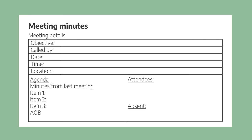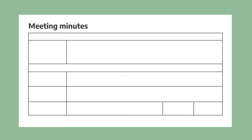Before we move on to the next section, I just want to mention that this is one version — there are many other types of template and sometimes people include other things. It really depends on your company or organization and the types of meetings you attend. Now let's look at the next section: often at the start of a meeting, the minutes from the last meeting are reviewed. Any changes made or important information relating to them can be noted here.